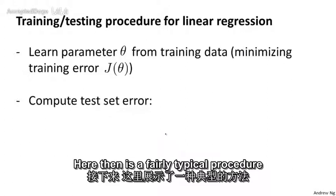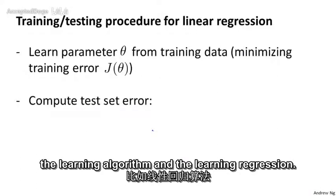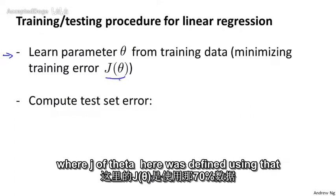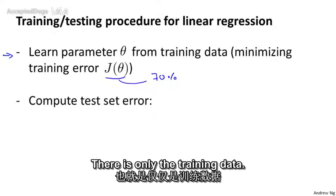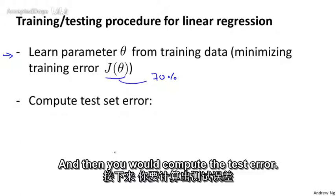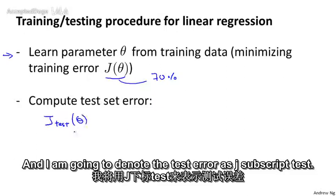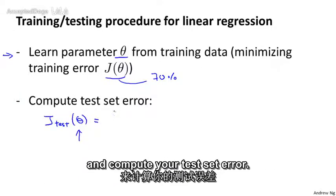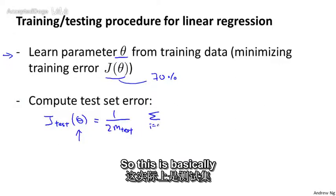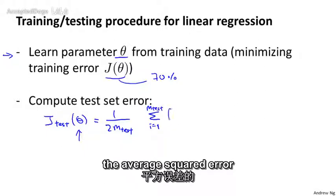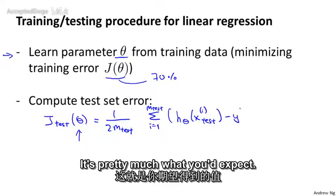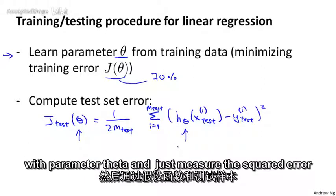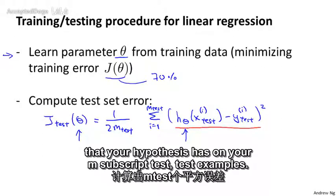Here then is a fairly typical procedure for how you would train and test a learning algorithm, say linear regression. First, you learn the parameters theta from the training set by minimizing the usual training error objective J of theta, defined using the 70% of all the data you have. And then you would compute the test error, which I'm going to denote as J subscript test. You take the parameter theta learned from the training set and compute the test set error, which is basically the average squared error as measured on your test set — running every test example through your hypothesis with parameter theta and measuring the squared error on your m subscript test examples.